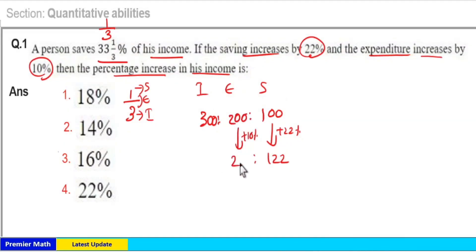So 200 plus 20 equals 220, the new expenditure. This means 220 plus 122 equals 342, the new income.